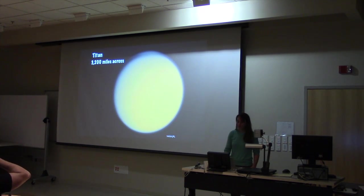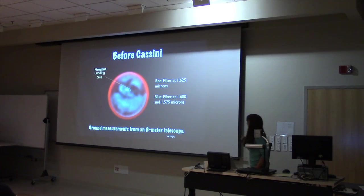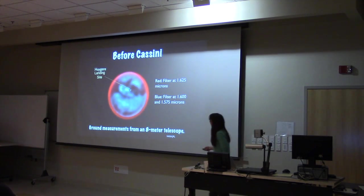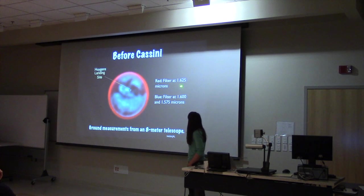And just so we have an idea about what we really knew about Titan before Cassini, this is pretty much the best image that we had in terms of what's underneath that dense atmosphere. So this is an image that was actually taken from an 8-meter, which is a large telescope, on the surface of the Earth.